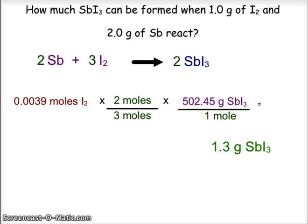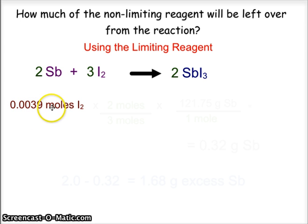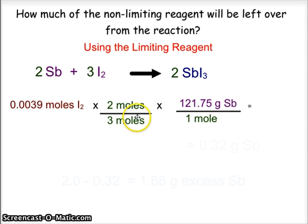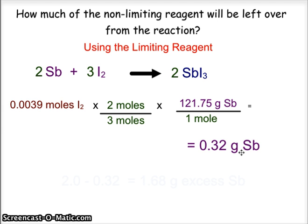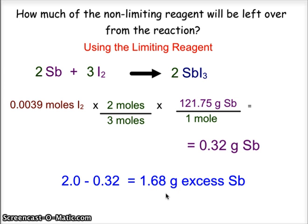To determine the excess, using the limiting reagent of 0.0039 moles of iodine, the 2-to-3 mole ratio, and the gram formula mass of antimony of 121.75, we find we only use 0.32 grams of antimony. Since we started with 2 grams of antimony and only use up 0.32, we're going to have an excess of 1.68 grams of antimony from this reaction.